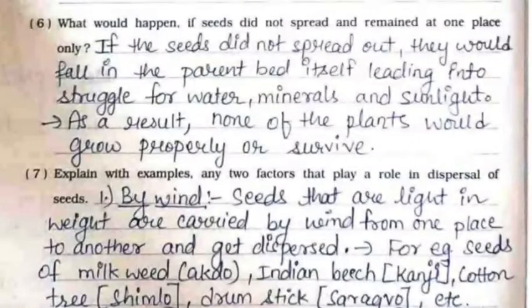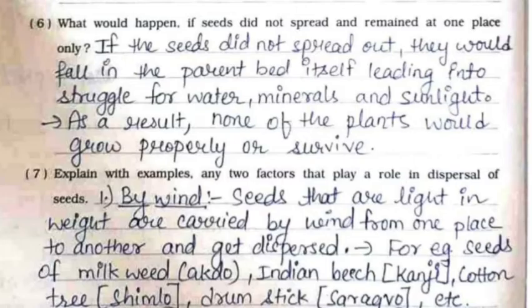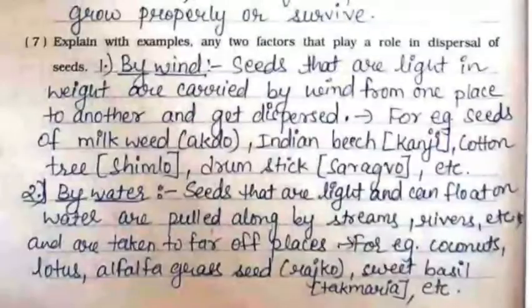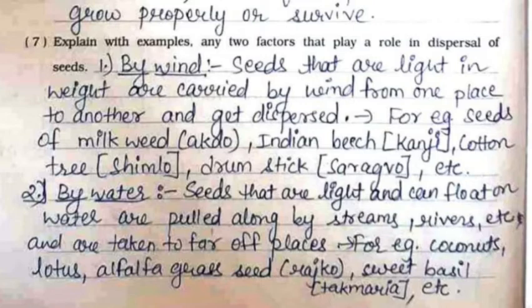Sixth: what would happen if seeds did not spread and remained at one place only? If the seeds did not spread out they would fall in the parent bed itself, leading to struggle for water, minerals, and sunlight. As a result none of the plants would grow properly or survive. Seventh: explain with examples any two factors that play a role in dispersal of seeds.